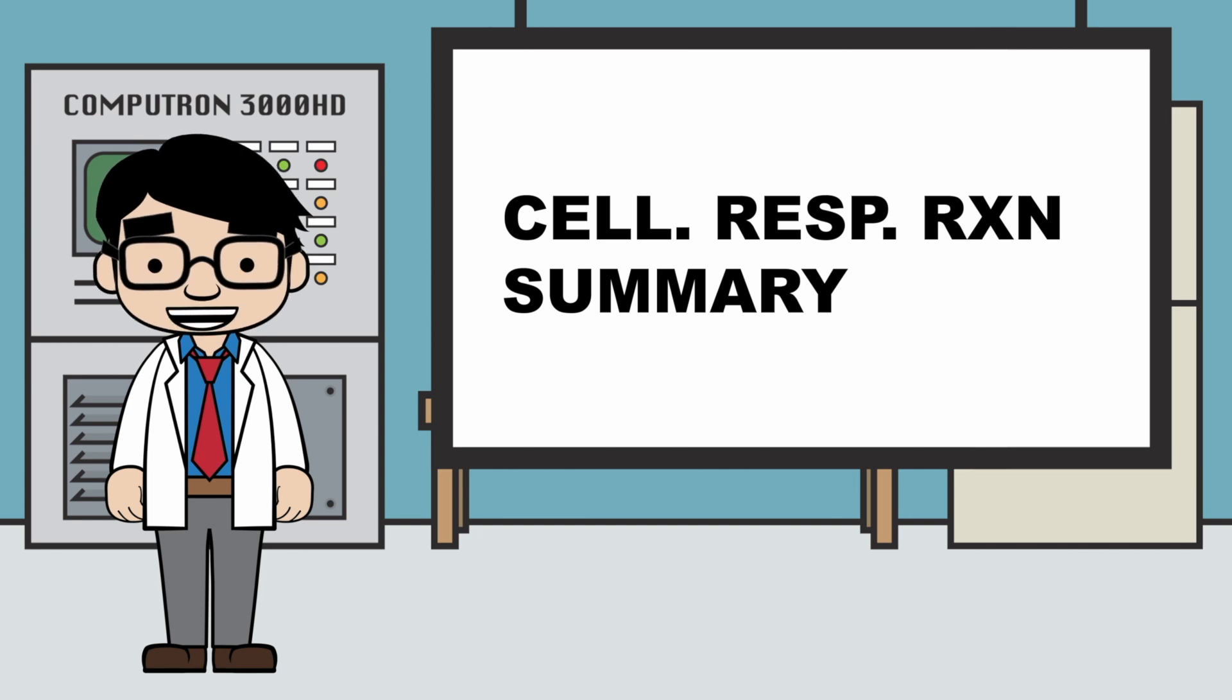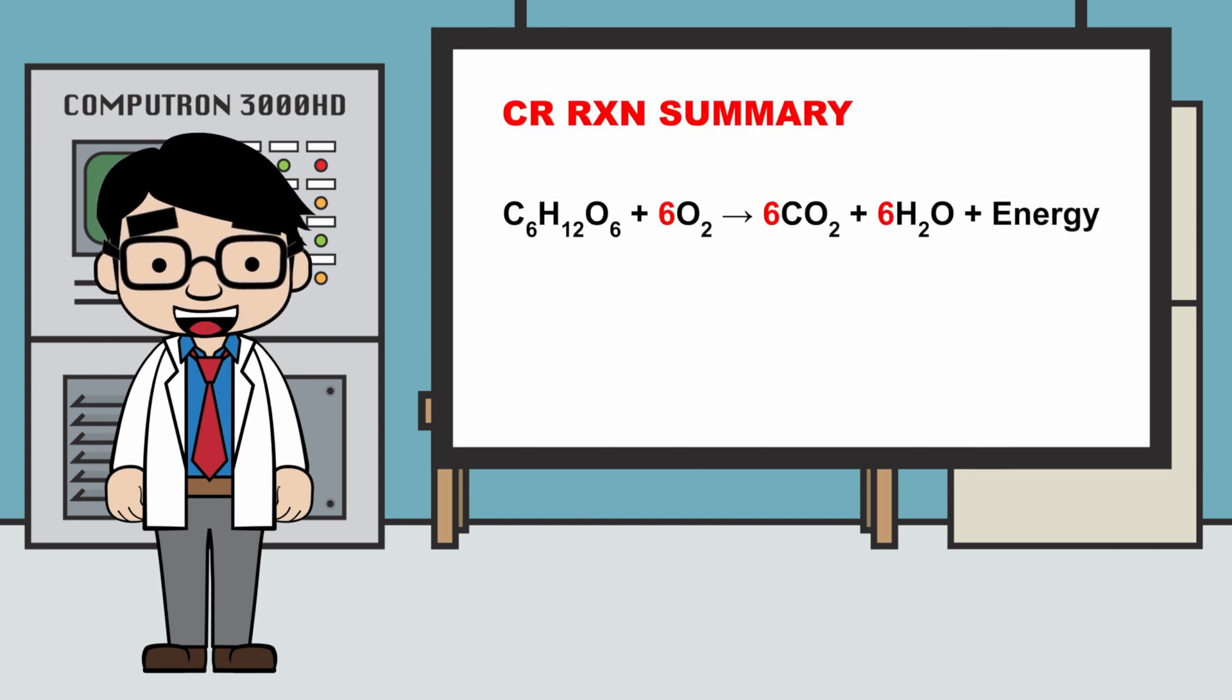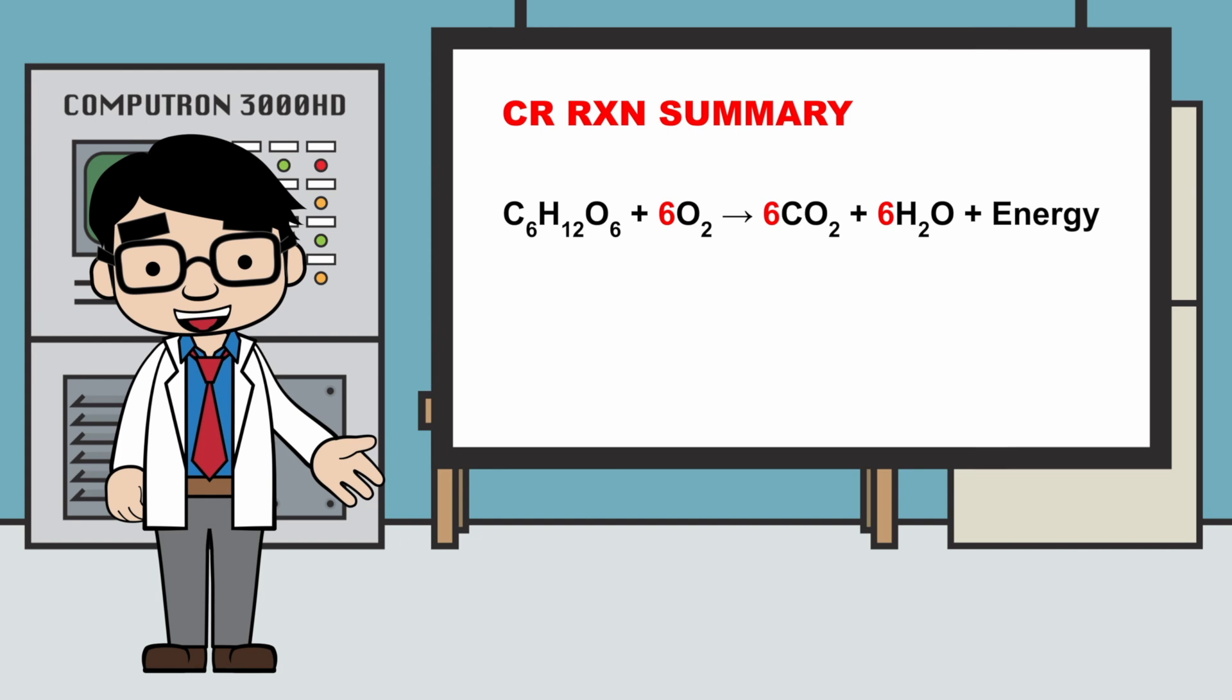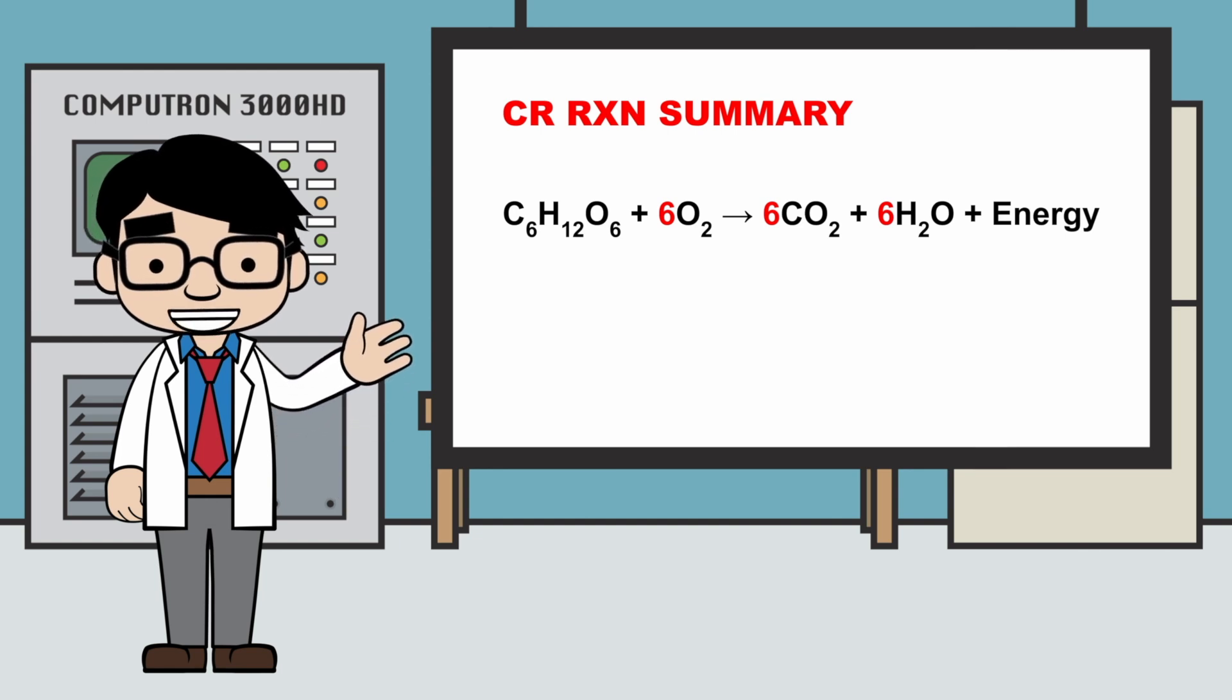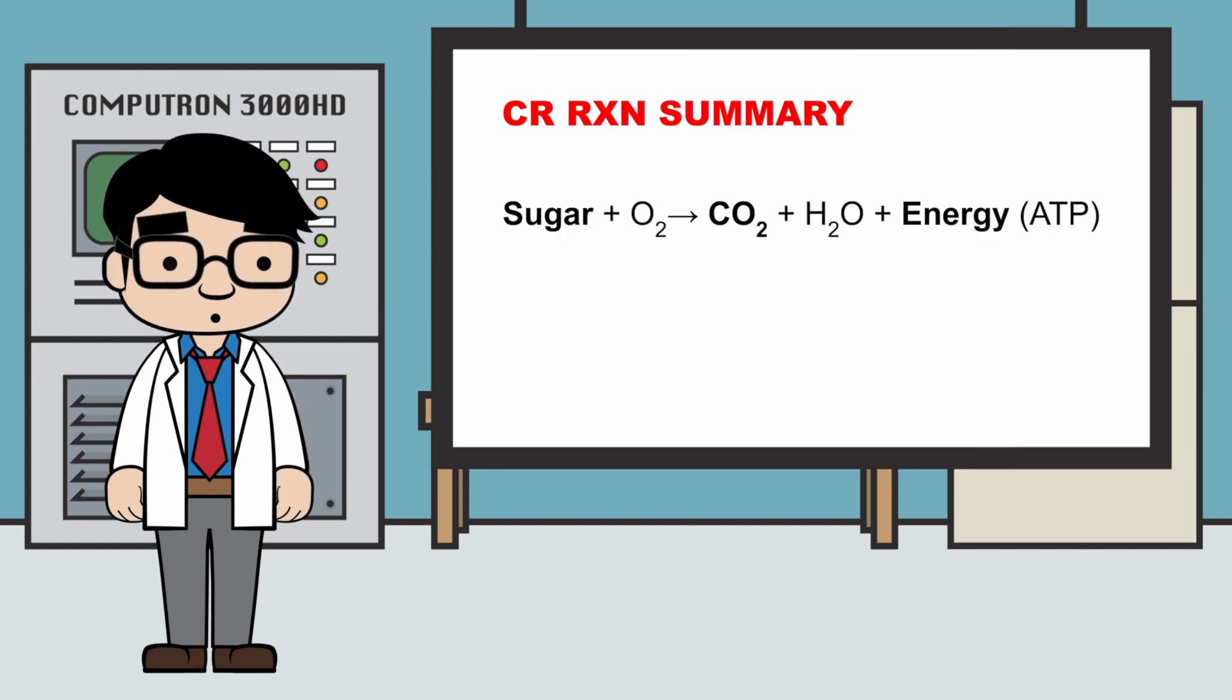Let's summarize the cellular respiration reaction. The cellular respiration reaction starts with one glucose molecule and six oxygen molecules, and ends with six CO2 molecules, six water molecules, and lots of energy in the form of ATP. But we can simplify this to sugar and oxygen gets turned into carbon dioxide, water, and energy.